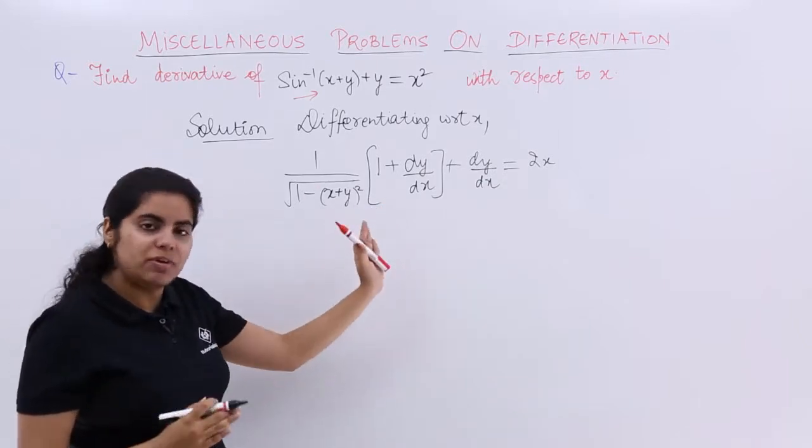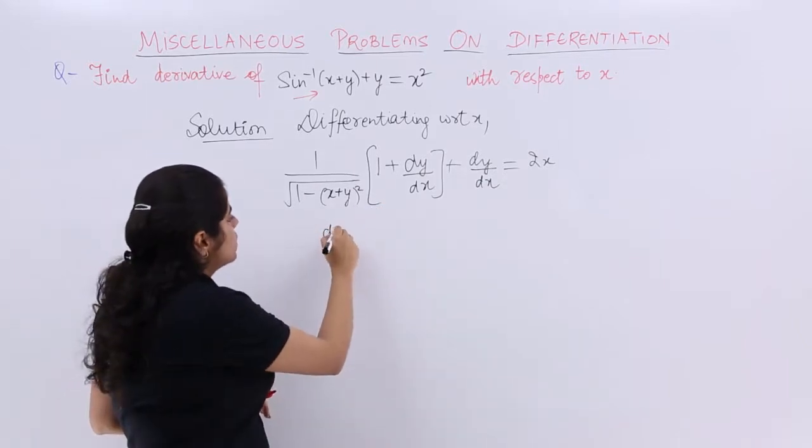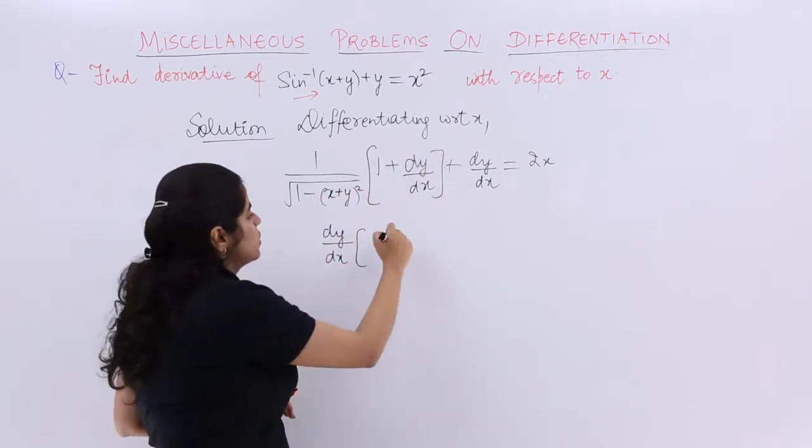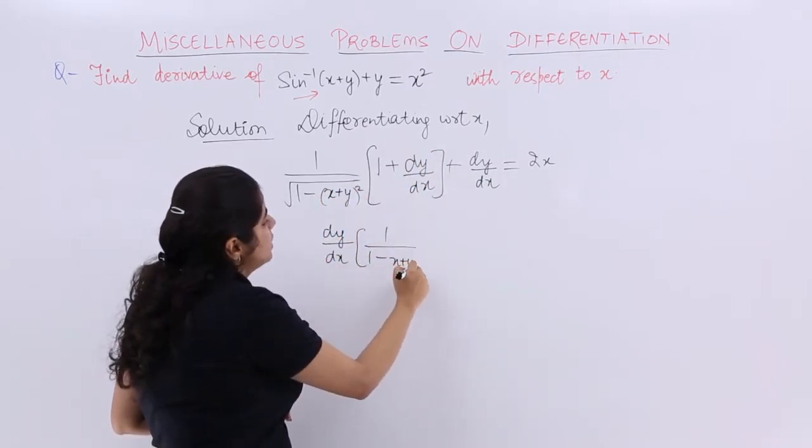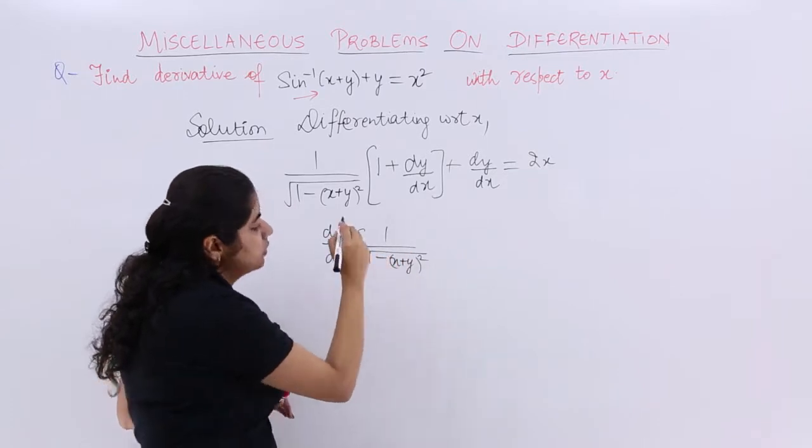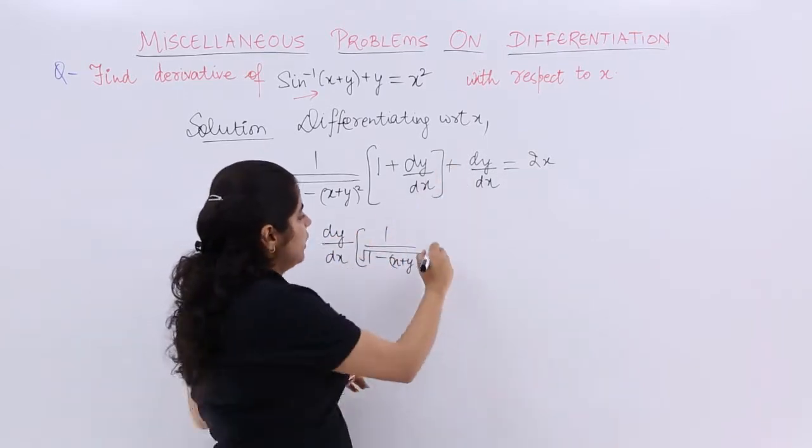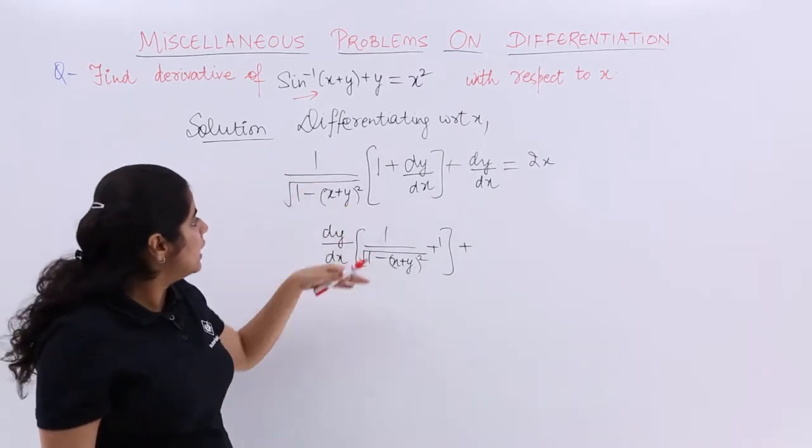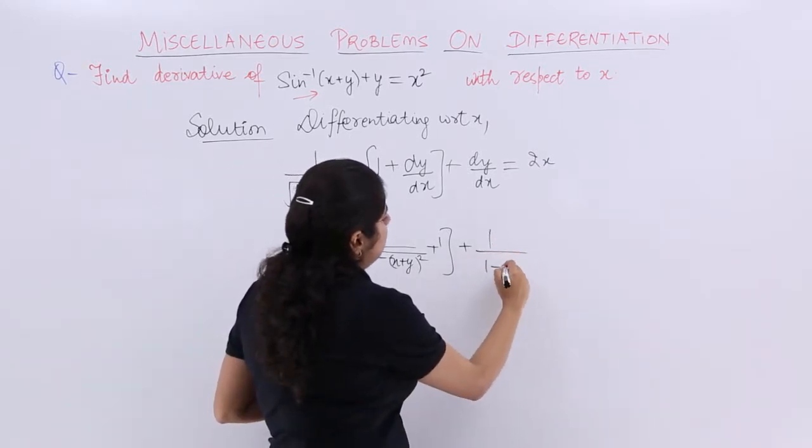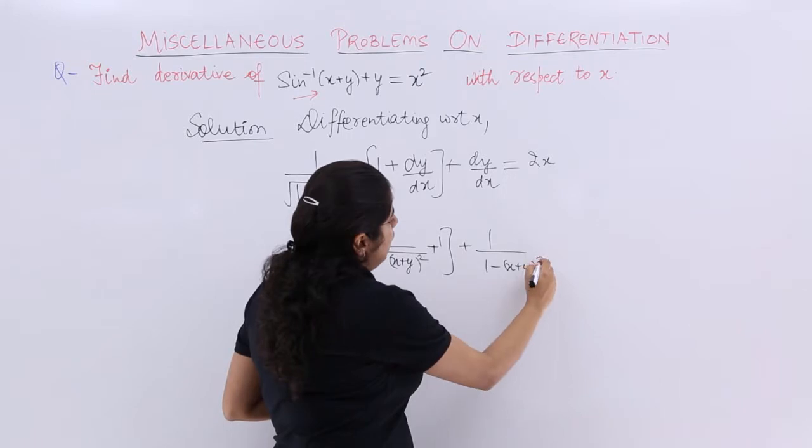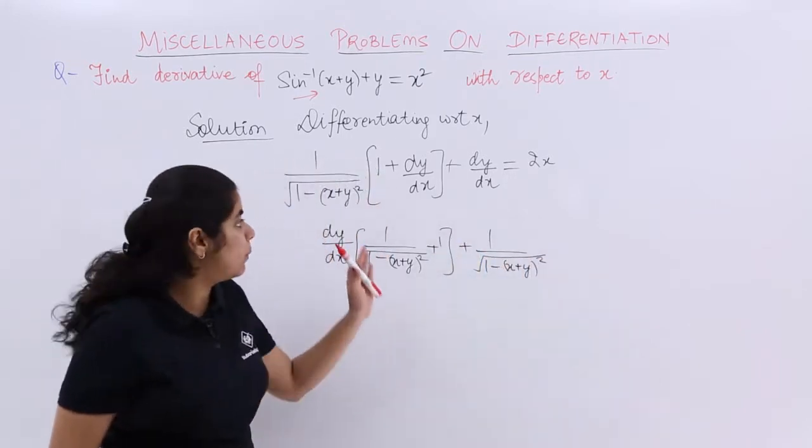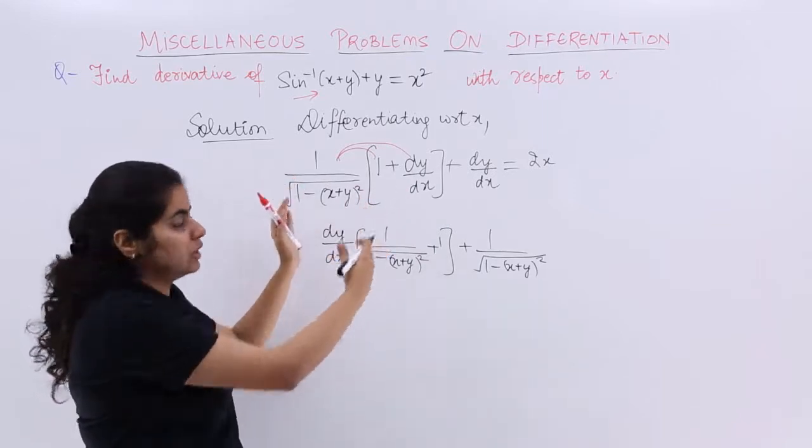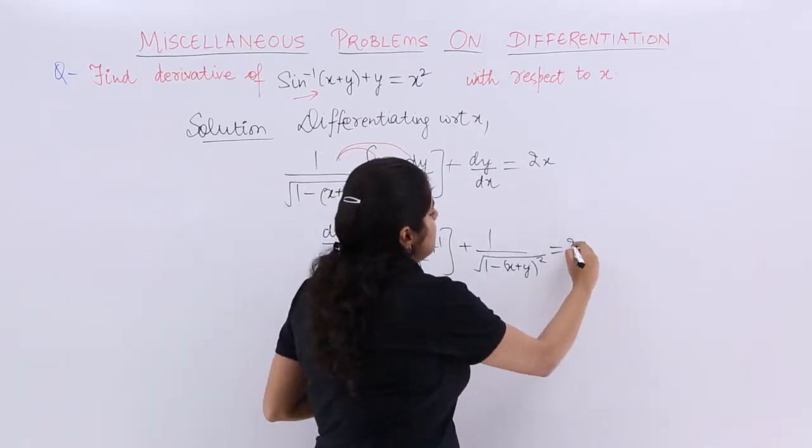Now dy/dx wherever it is, let's take common. So dy/dx, 1 will come with this thing. So it is 1 upon under root 1 minus (x+y)² plus 1 from here. It is nothing but 1 upon under root because there are 2 terms in this whole expression and is equal to 2x as it is.